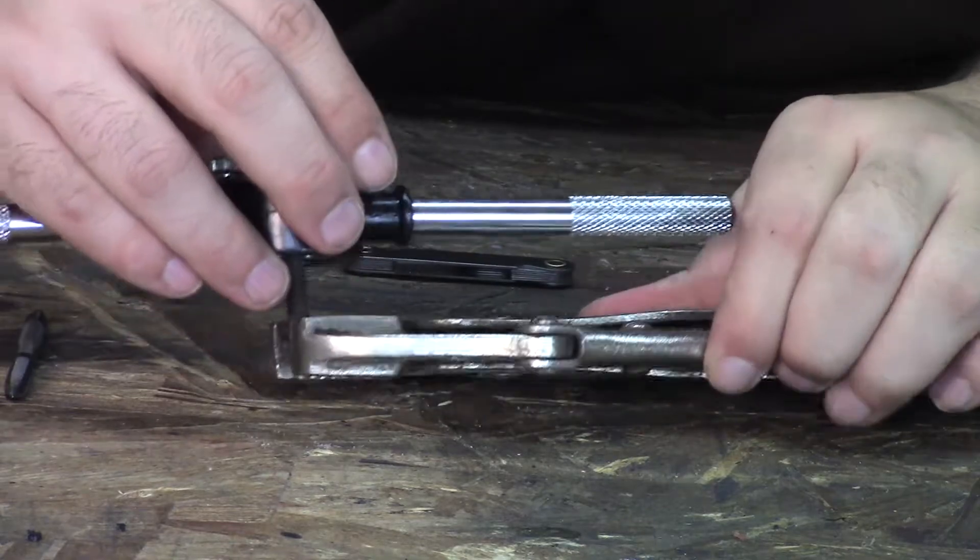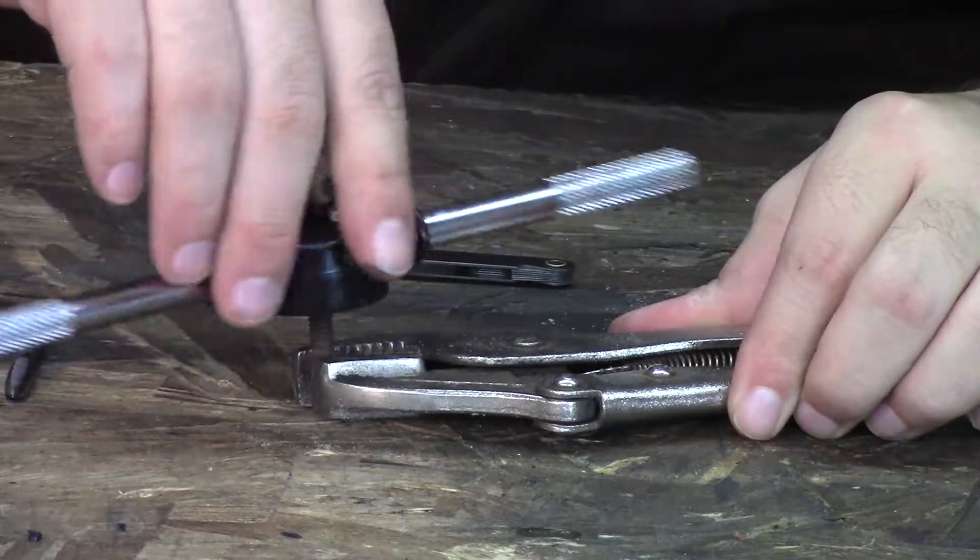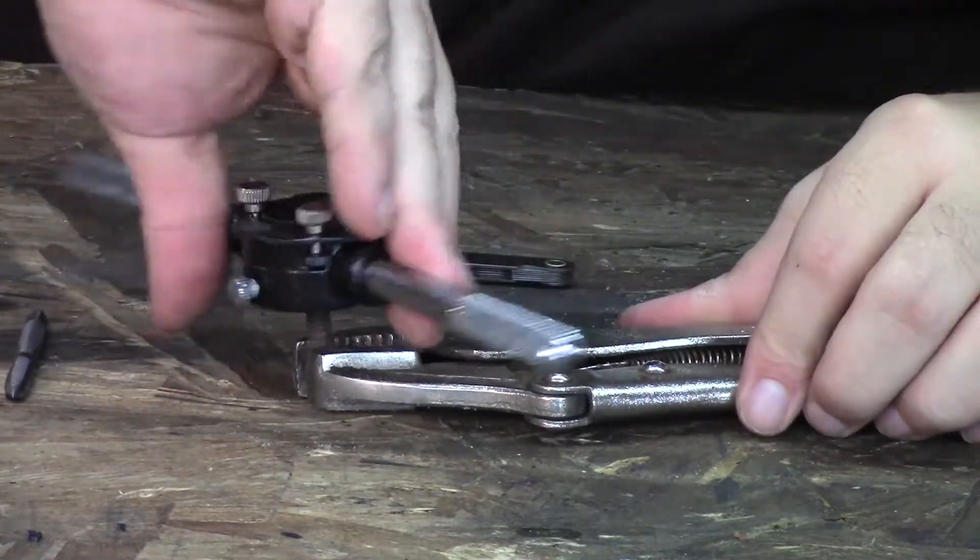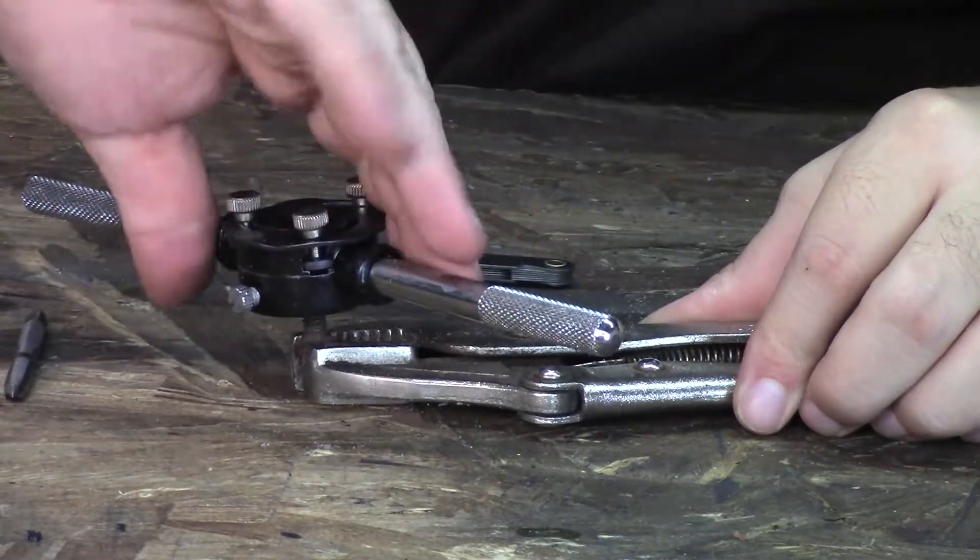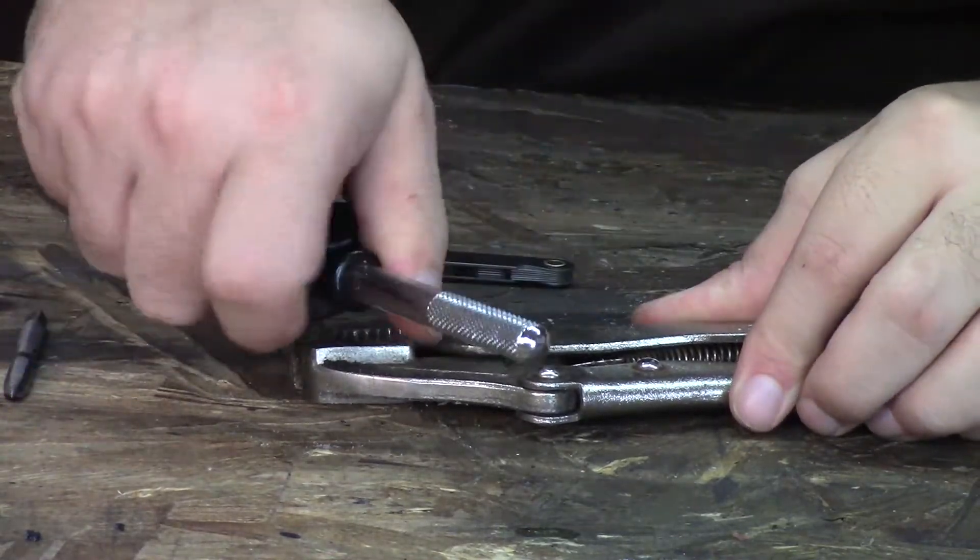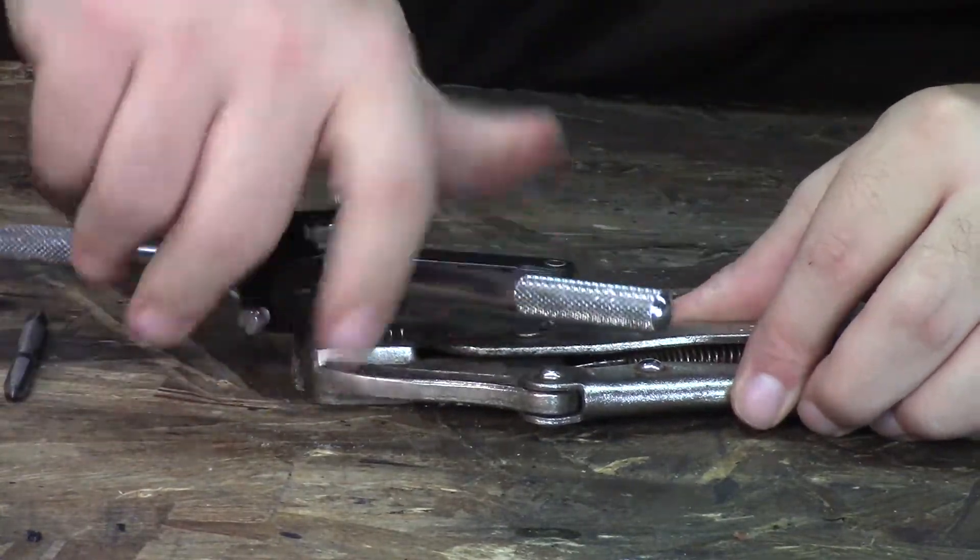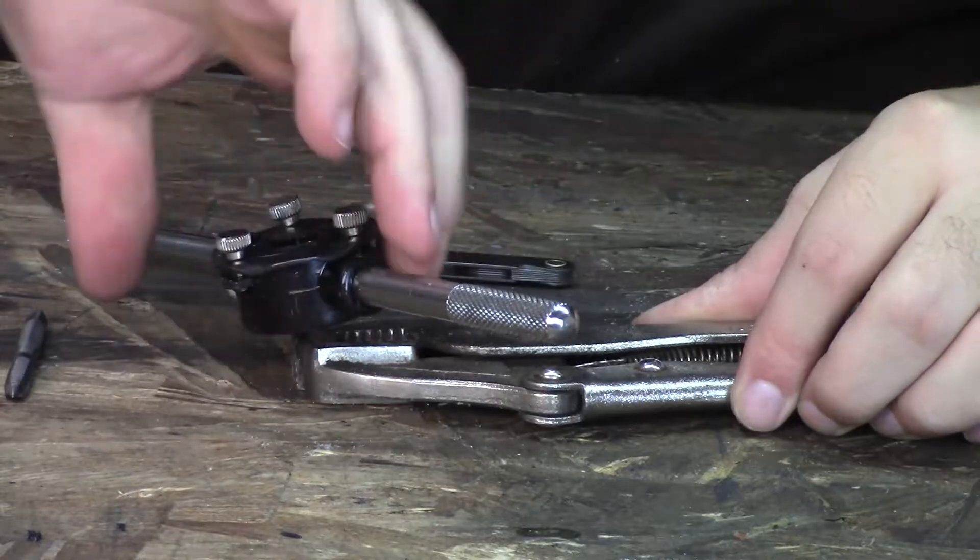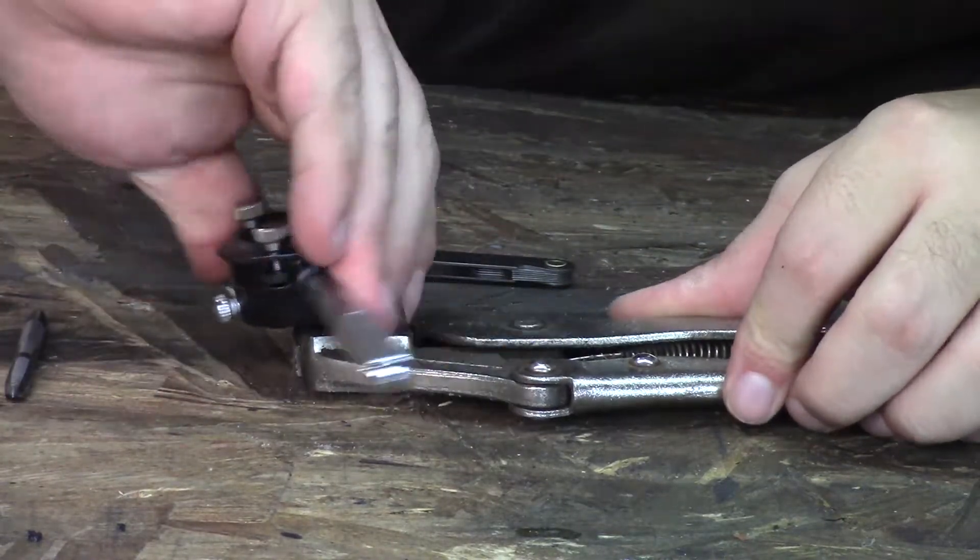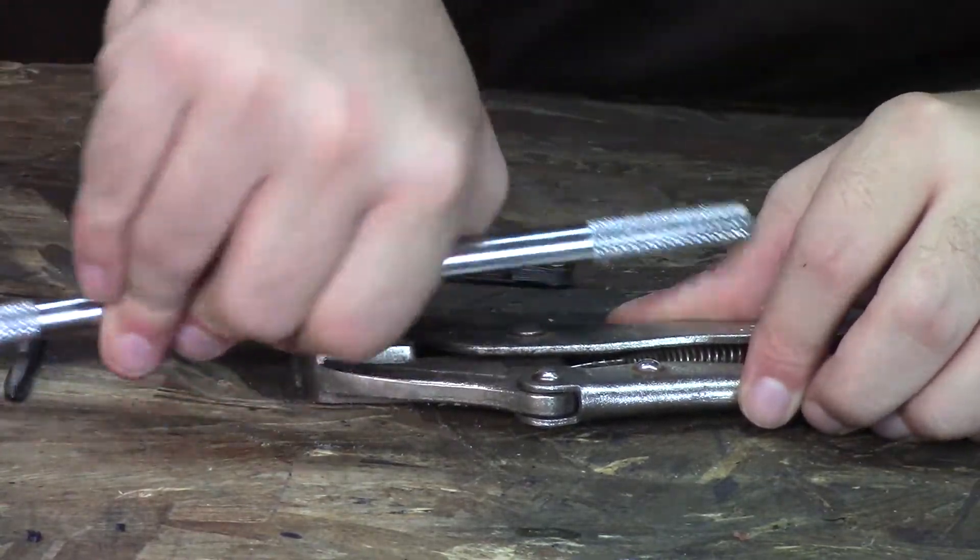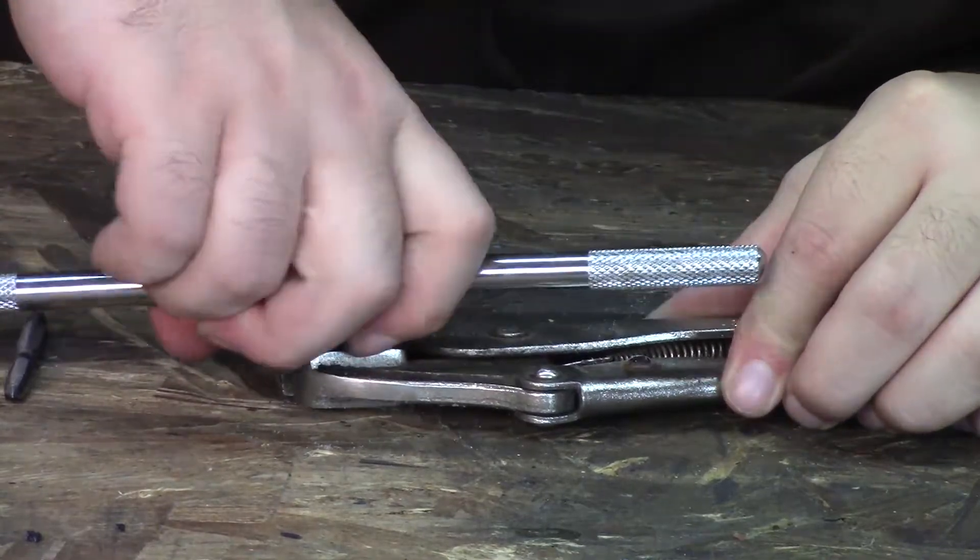All you do is thread it on and start twisting. This will cut either new threads or recut your old threads so you get a nice clean bolt. I'm doing this on a pretty clean bolt already, but if you're doing it on a bolt that's been rounded over, the cutting would generate a lot of heat.